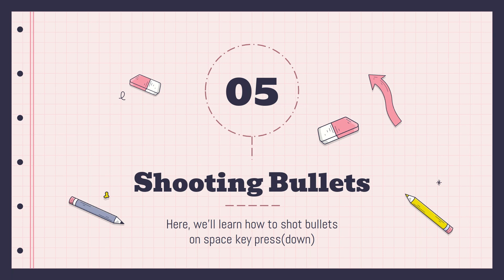What I want us to cover in this video is learning how to shoot bullets. Our spaceship is going to shoot bullets, and when those bullets hit alien crafts, the alien craft dies. In the last tutorial I thought we'd cover displaying enemies, but I decided we'd do bullet shooting first, and then move on to enemies from there.